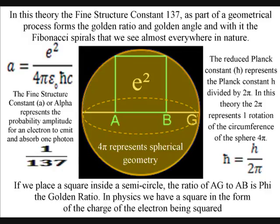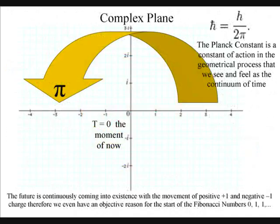Therefore, we have a square of charge as a constant within this geometrical process. We also have the Planck constant linked to 2π, representing one rotation of the sphere.